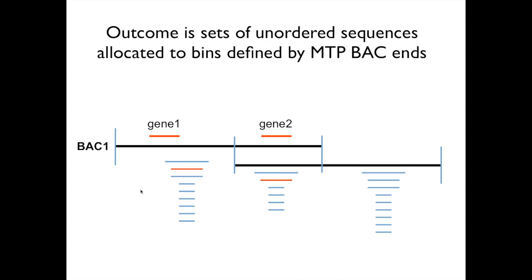The outcome of the combinatorial sequencing method leads minimally to this type of information: considering part of a minimal tiling path, two BACs overlap, and their overlap positions define bins bounded by the ends of the BACs. Our sequencing method allows us to allocate sequences to each bin, so the minimum resolution we obtain is genes within these BAC bins. As time goes on and more information is added, ordering improves. This level of sequence knowledge helps answer the question of what candidate genes are in the region of interest.